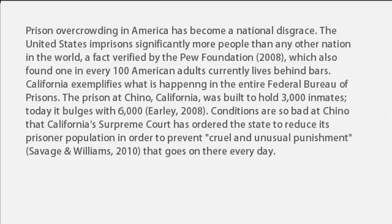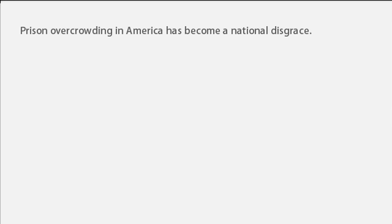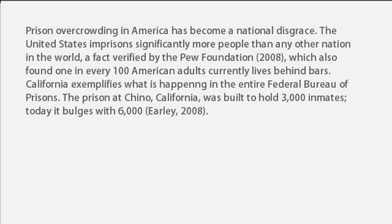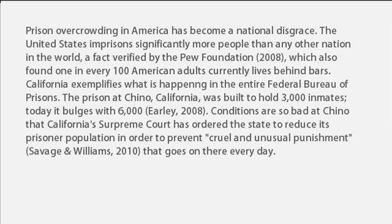Let's examine this paragraph again to determine the kind of support that can lead to an informed opinion about a topic. "Prison overcrowding in America has become a national disgrace. The United States imprisoned significantly more people than any other nation in the world, a fact verified by the Pew Foundation, which also found one in every 100 American adults currently lives behind bars. California exemplifies what is happening in the entire Federal Bureau of Prisons. The prison at Chino, California, was built to hold 3,000 inmates. Today, it bulges with 6,000. Conditions are so bad at Chino that California's Supreme Court has ordered the entire state to reduce its prisoner population in order to prevent 'cruel and unusual punishment' that goes on there every day."